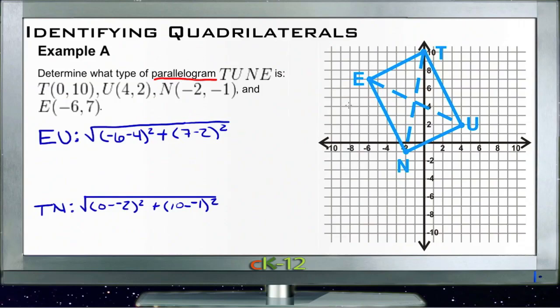So we know it's a parallelogram, so we know that EN and TU are parallel, and we know that ET and NU are parallel. The question is, is it a subclassification of a parallelogram? In other words, is it a rectangle or maybe a square? So what we need to do is see if our matching sides are either all the same length or come in pairs of the same length, or if our diagonals are the same. If the diagonals are the same, then we know it's at least a rectangle, and then we can find out whether or not the sides were the same after that. So let's take a look at the diagonals.